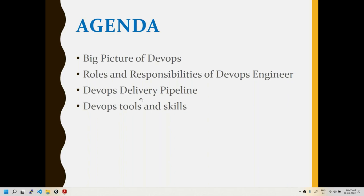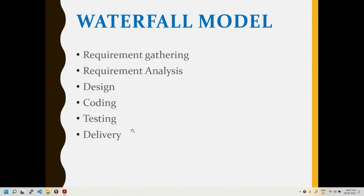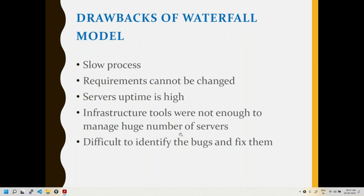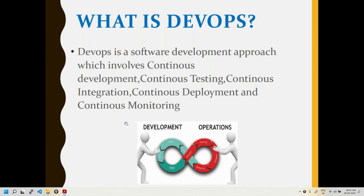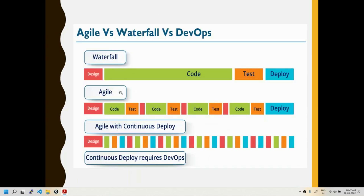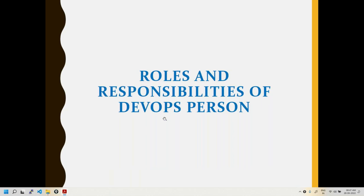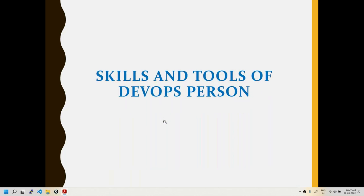We'll be talking about the DevOps delivery pipeline, DevOps tools and skills. Whatever I've explained is in this presentation, which I'll be providing as documentation — notes for your reference after the class. As a quick walkthrough, I've explained waterfall drawbacks, agile methodology, and why DevOps came in — those are the three reasons. We've also discussed what DevOps is, a comparison with waterfall and agile, and the roles and responsibilities and skills of a DevOps person.